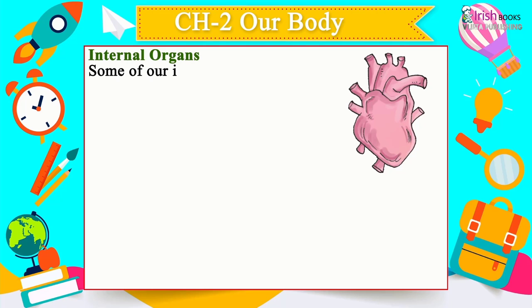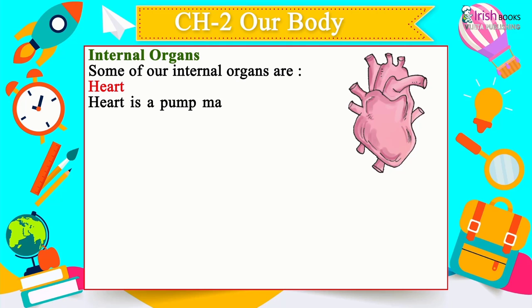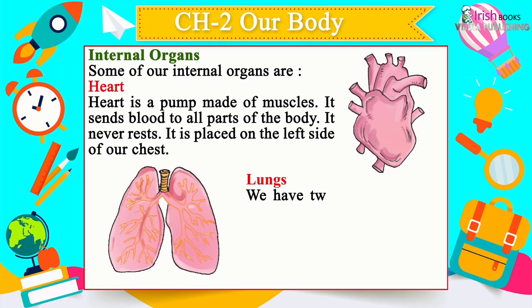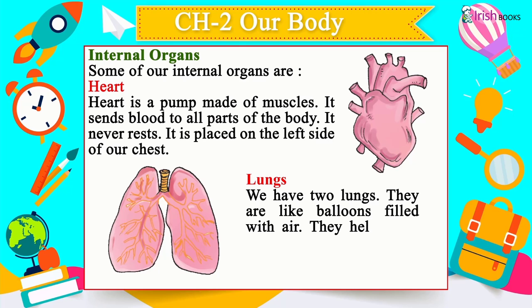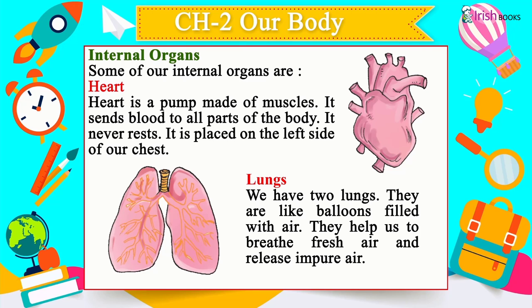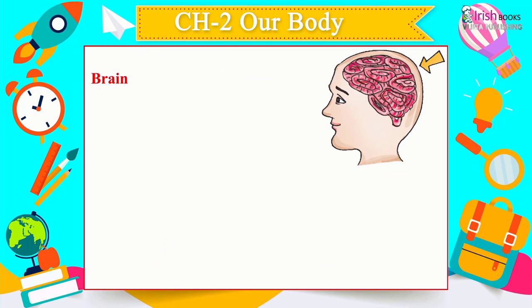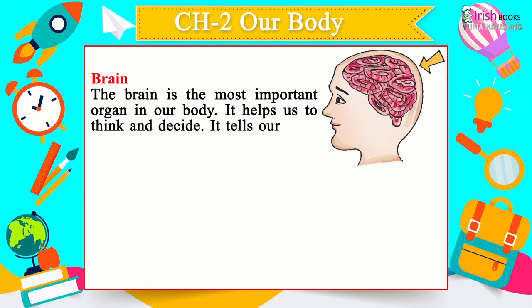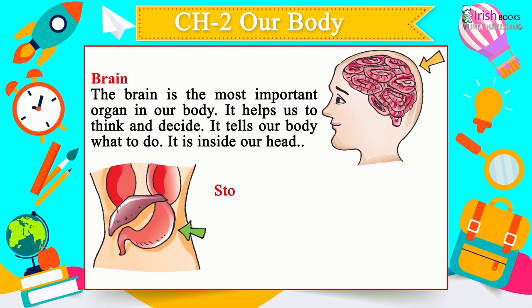Internal Organs in detail: The heart is a pump made of muscles; it sends blood to all parts of the body and never rests — it is placed on the left side of the chest. We have two lungs, like balloons filled with air; they help us breathe fresh air and release impure air. The brain is the most important organ — it helps us think, decide, and tells our body what to do; it is inside our head.